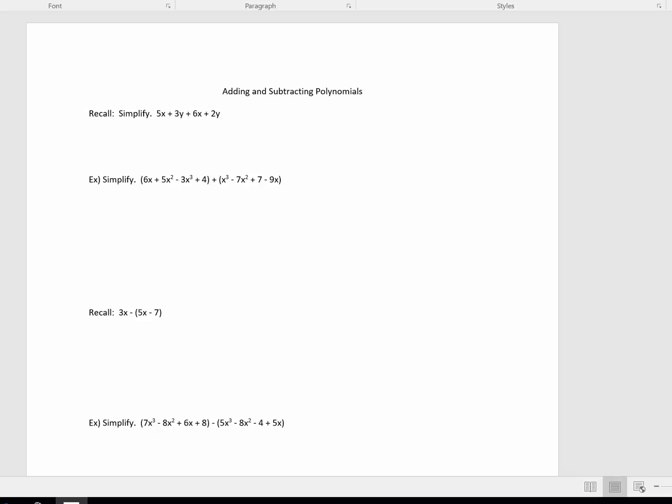Recall, let's simplify this expression here. What do you do? You look for like terms. For instance, 5x and 6x are like terms, so 5x plus 6x is 11x. And then 3y plus 2y is positive 5y. And we would be done.